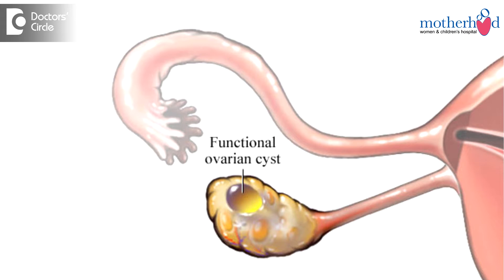What is an ovarian cyst? An ovarian cyst is basically a collection of fluid inside the ovary. This collection can be of plain serous fluid, or it can be blood, or it can be altered blood which we call as endometrioma.